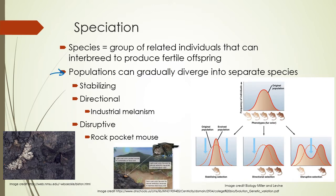Populations can change over time into separate species — this is known as speciation, the formation of new species. A couple of different ways selection and therefore speciation can occur. Stabilizing selection is where it's best to be average. We might start with some outliers, but over time being at the extremes is not good. Think about human birth weight — it's bad to be super tiny, it's bad to be super big, and so most of us tend to be right in the middle.